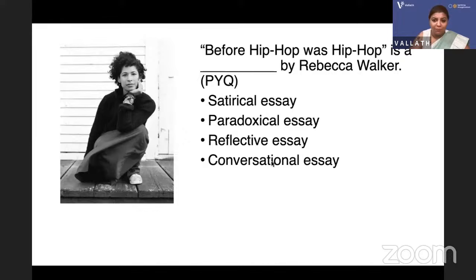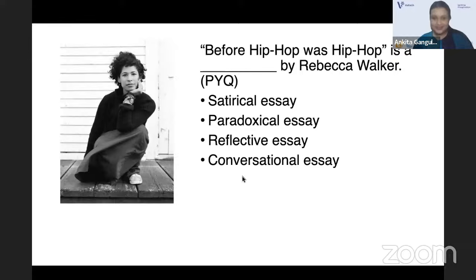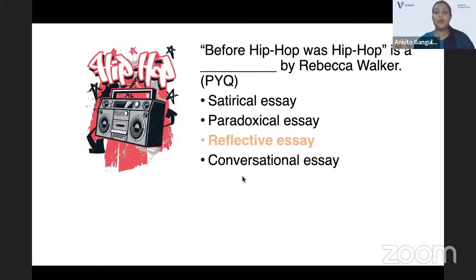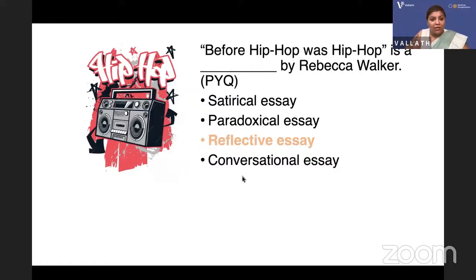'Before Hip Hop Was Hip Hop' is a work by Rebecca Walker — daughter of Alice Walker. What kind of essay is it: satirical, paradoxical, reflective, or conversational? It is a reflective essay, because Rebecca Walker reflects on her past days and illuminates how hip-hop affected her lifestyle and perspective. Also, Rebecca Walker is a very important figure of the third wave — she said 'I am the third wave.'